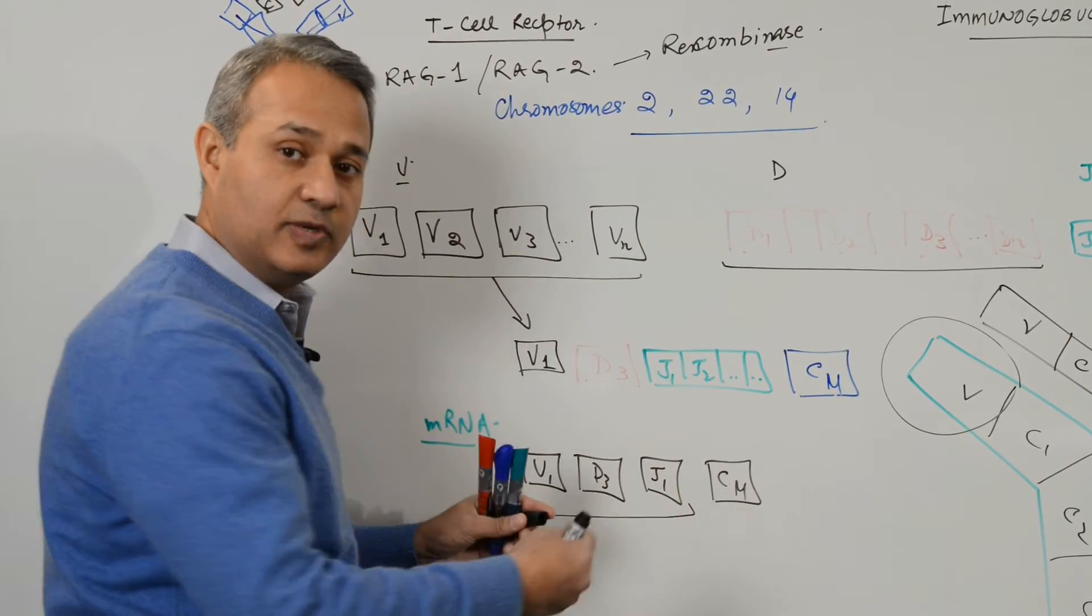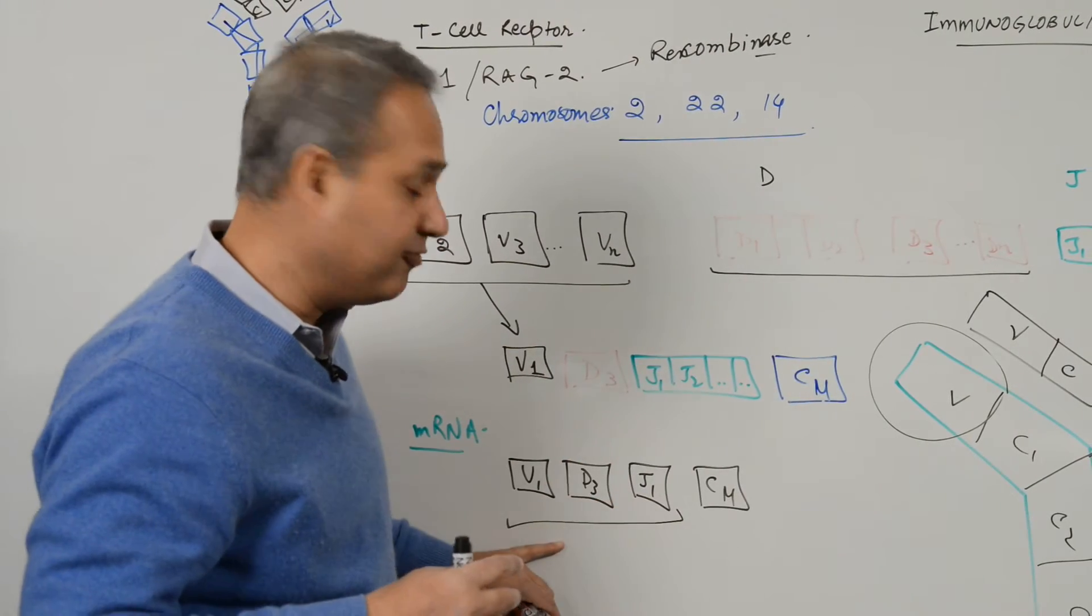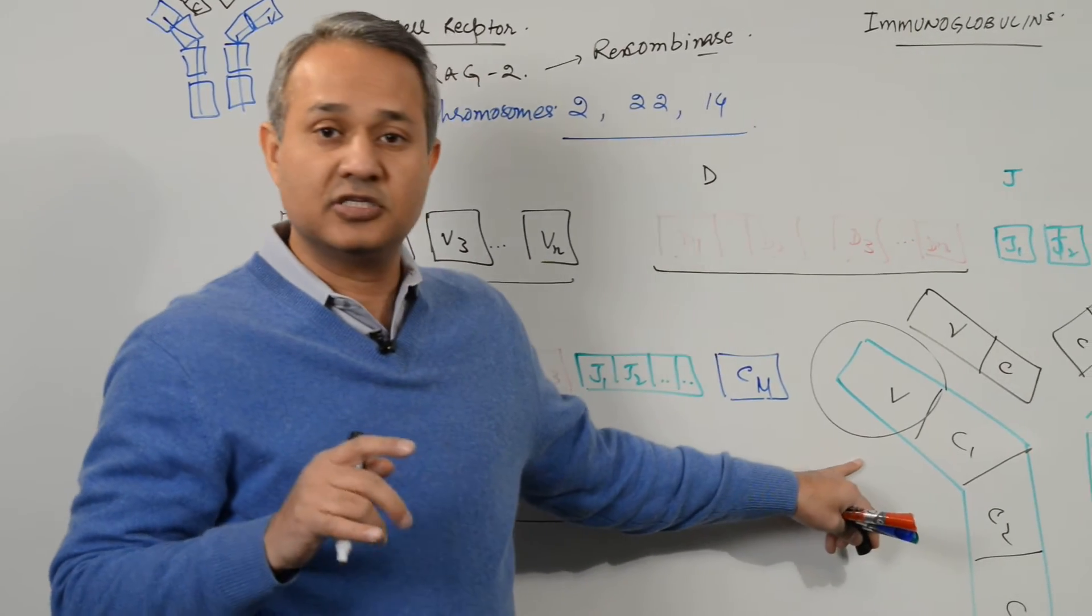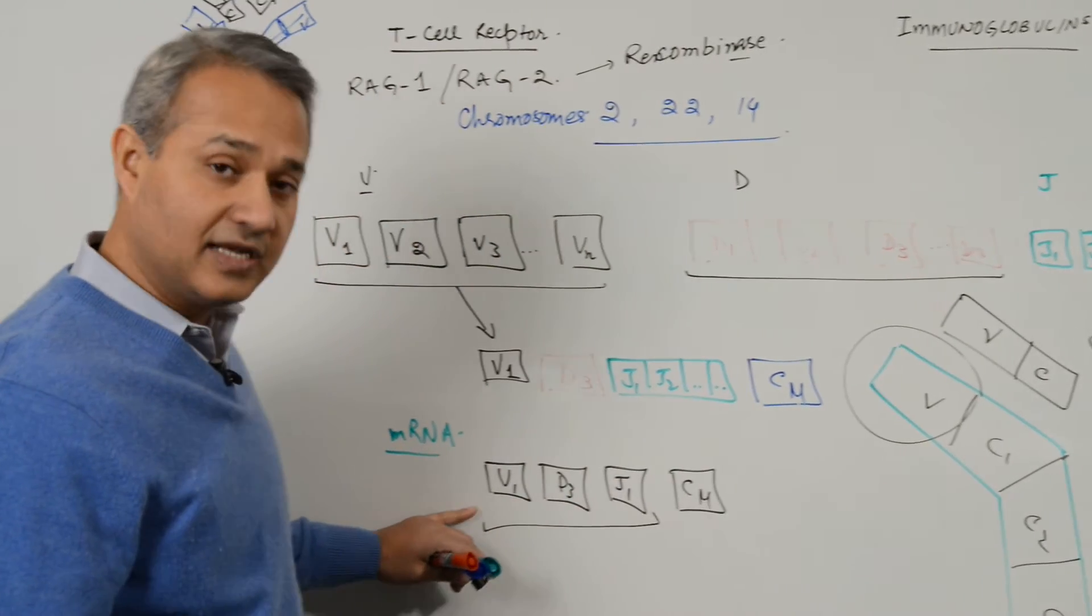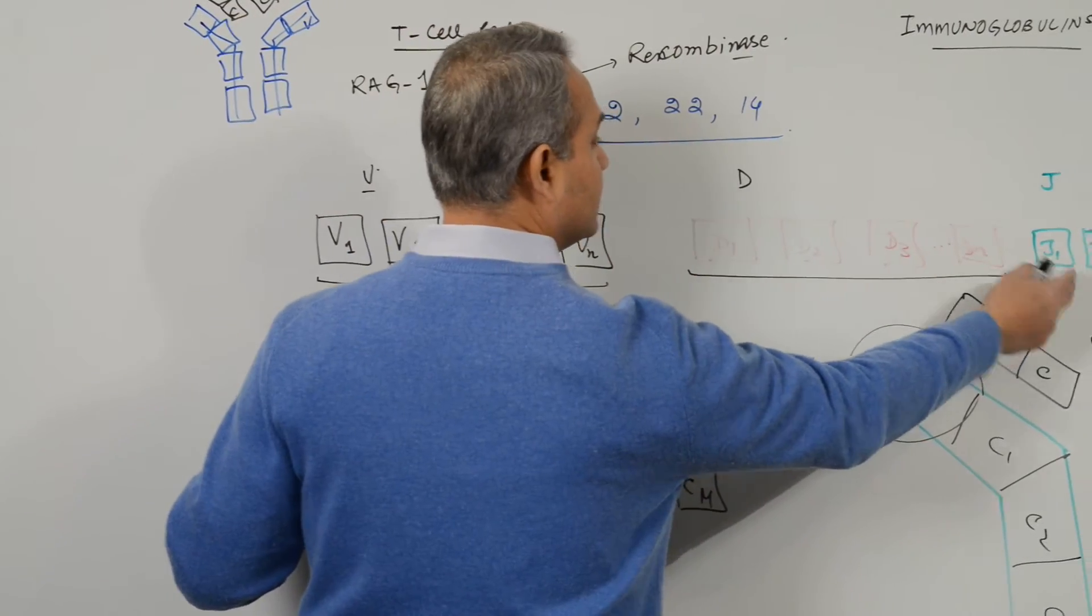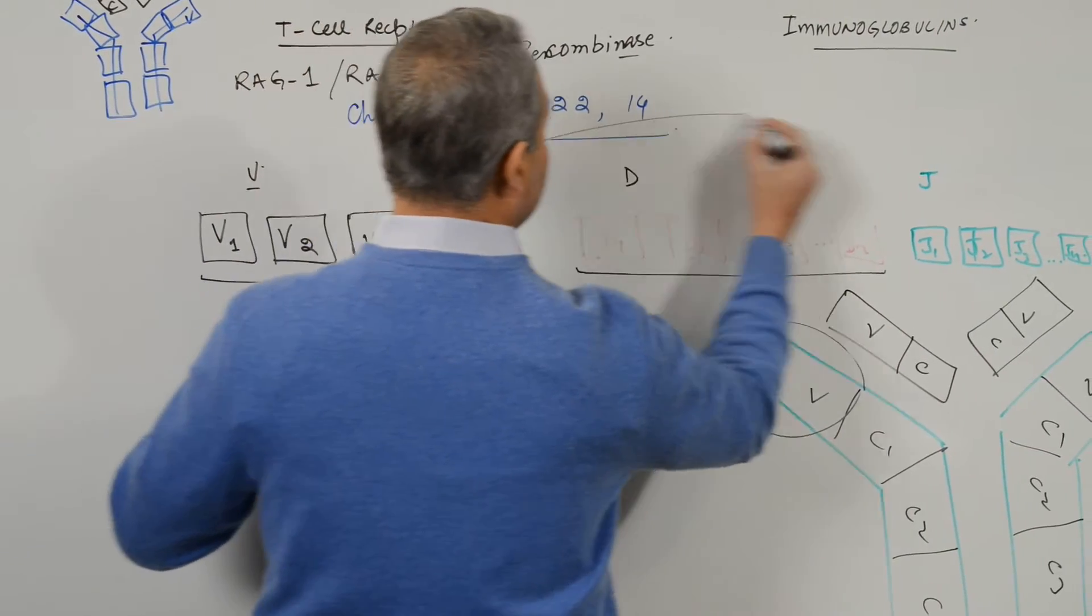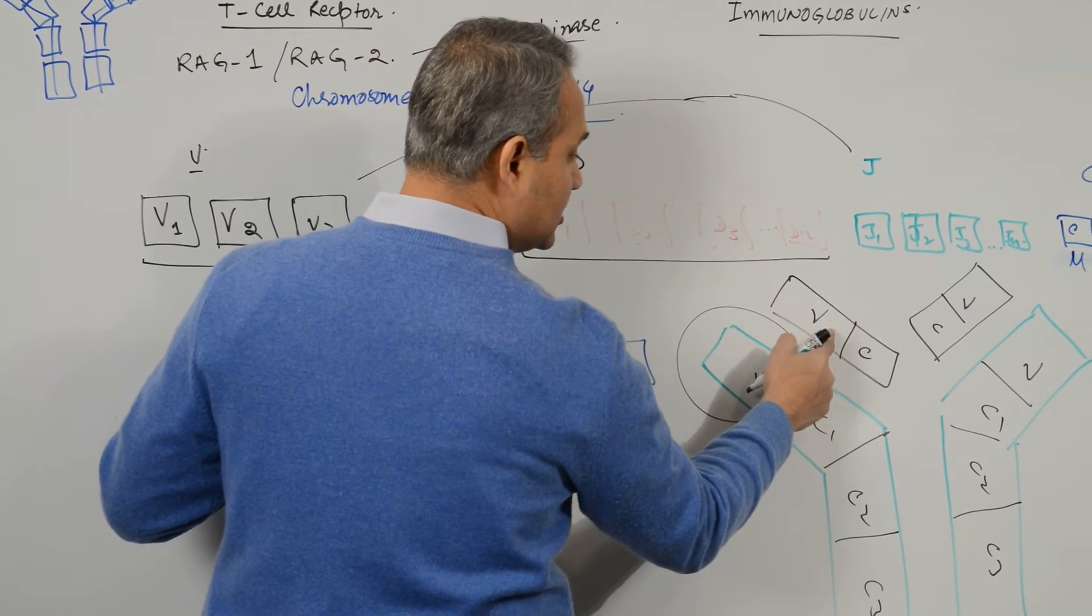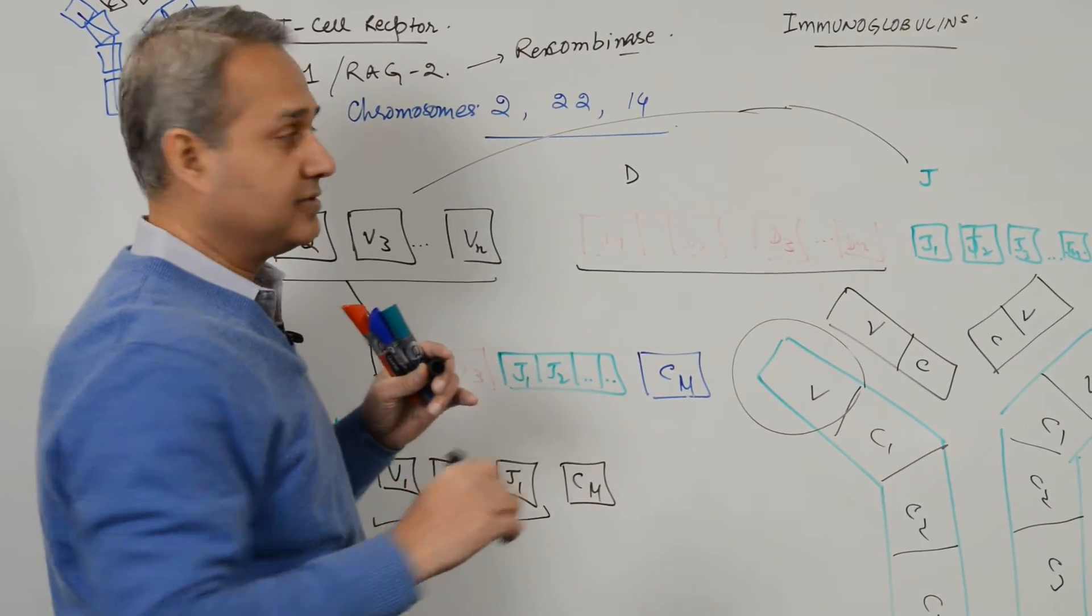So I would say it this way: the rearrangement of the DNA for V, D, and J gene pools will give rise to the variable regions of heavy chain. On the other hand, V and J, no D, V and J will combine to give rise to variable region of light chain.